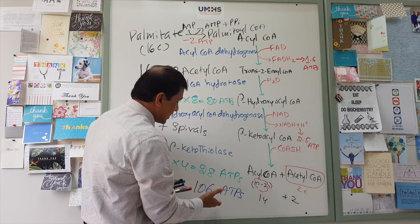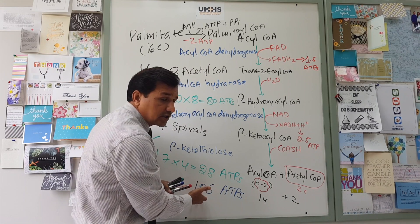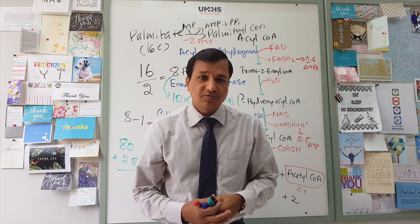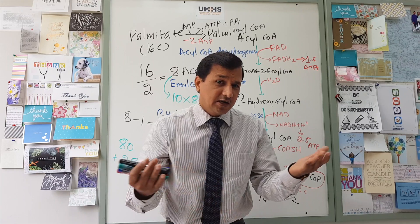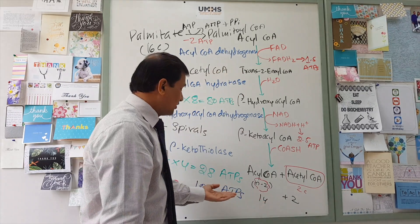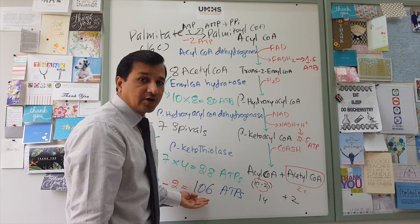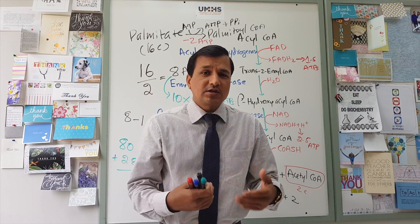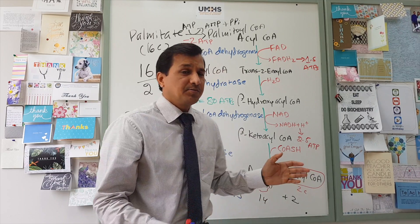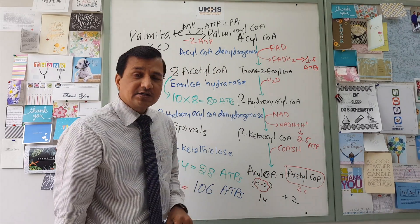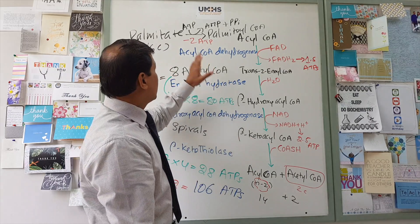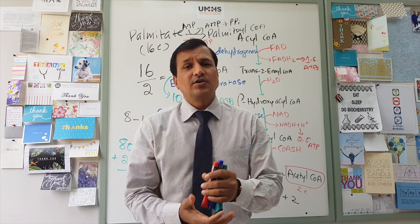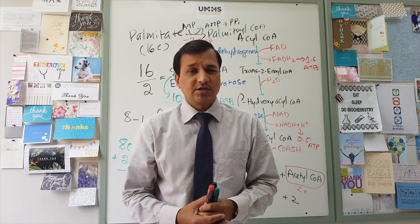So for stearoyl-CoA: 106 + 14 = 120 ATPs from the 18-carbon fatty acid. If your fatty acid is 14 carbons, just subtract 14 from 106. By addition or subtraction in increments of 14 ATPs per 2-carbon unit, you can calculate the net ATP yield for any even-chain fatty acid, using 106 as the baseline for palmitoyl-CoA. That is how you do ATP calculation from beta oxidation.